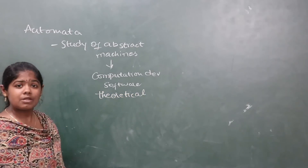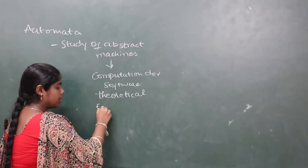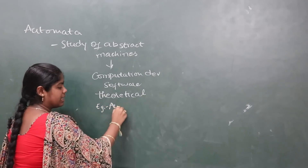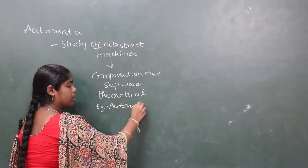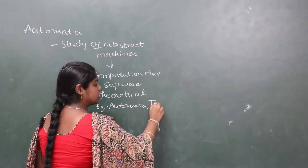Some examples of abstract machines are finite automata and Turing machines.